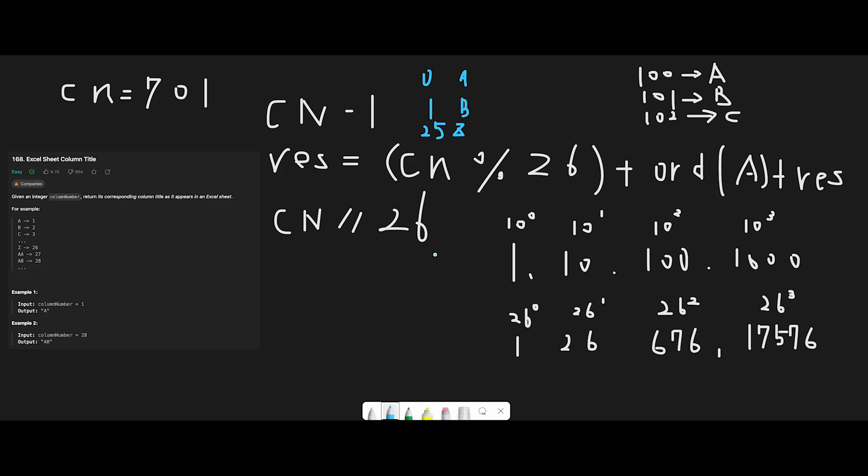That's because we use a base 26 system. Look at this. In daily life, if we add a new digit, first is 1, which is 10 to the power of 0. Then 10, we find the next digit, 10 to the power of 1, and the next 100, 10 to the power of 2, and then 1000, 10 to the power of 3, right?